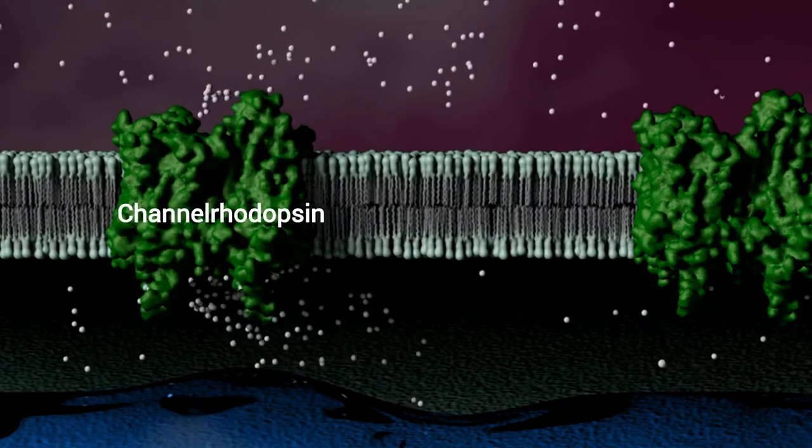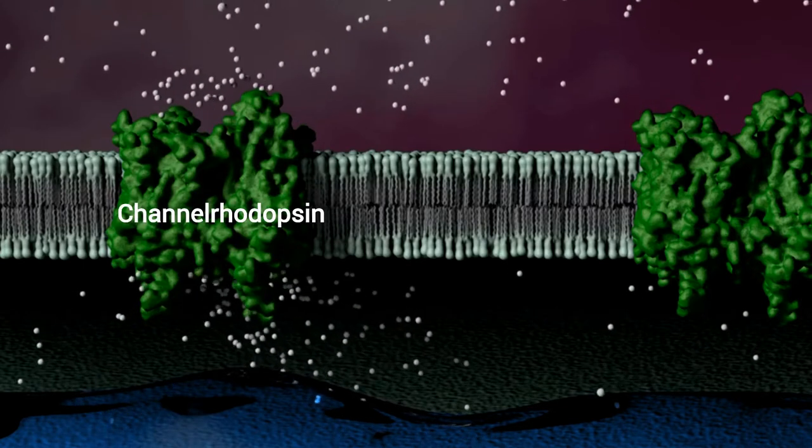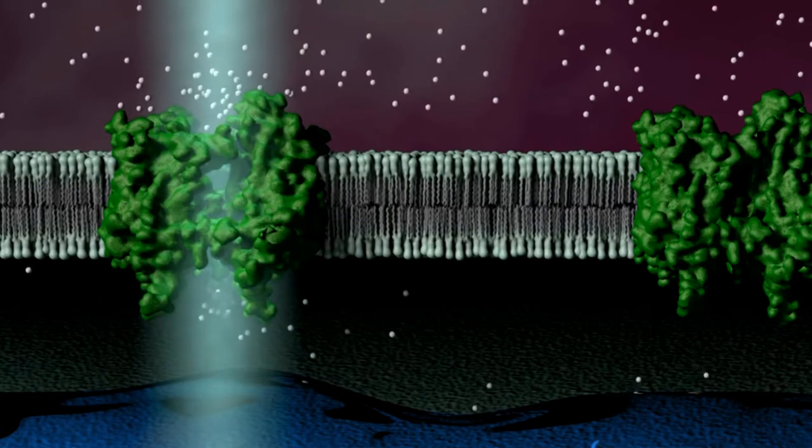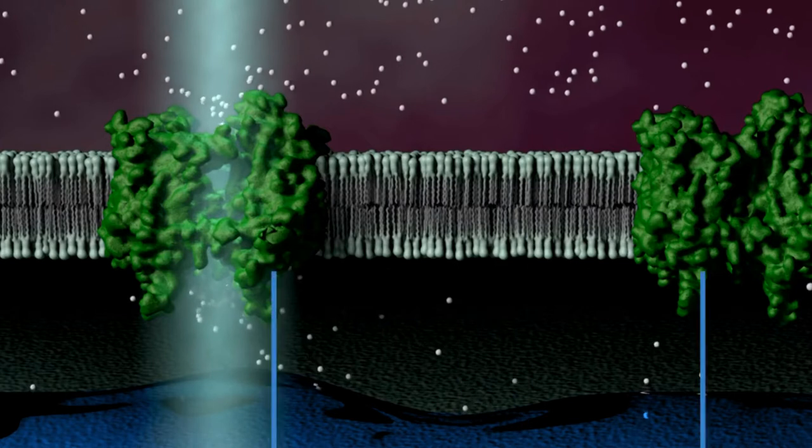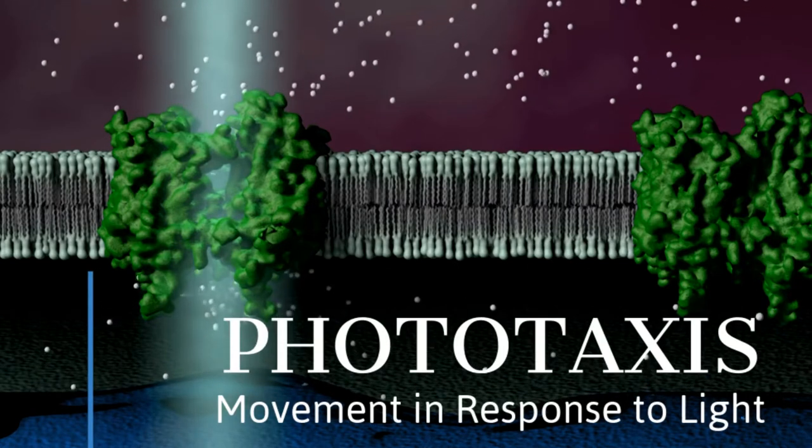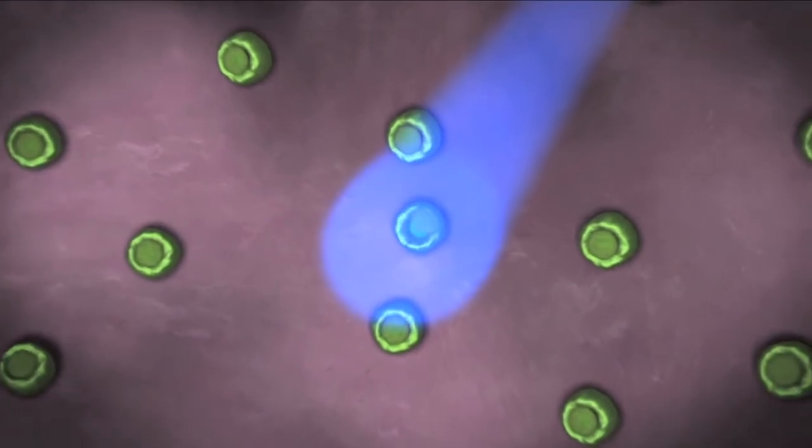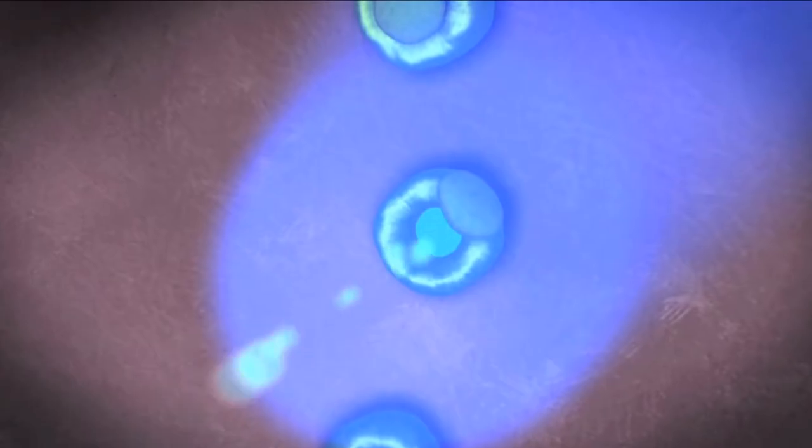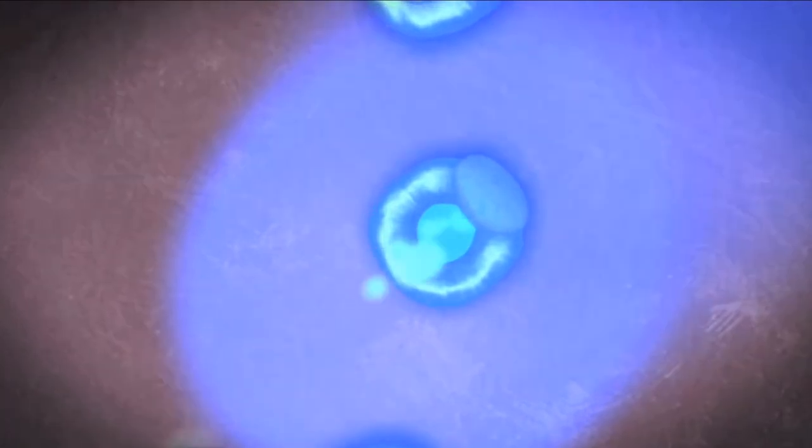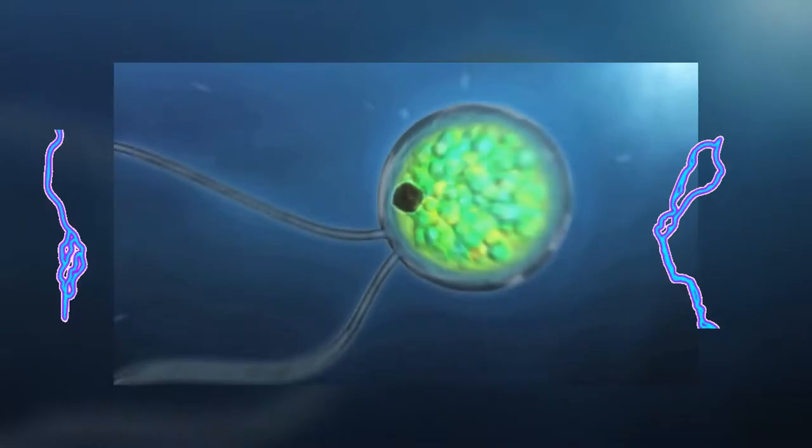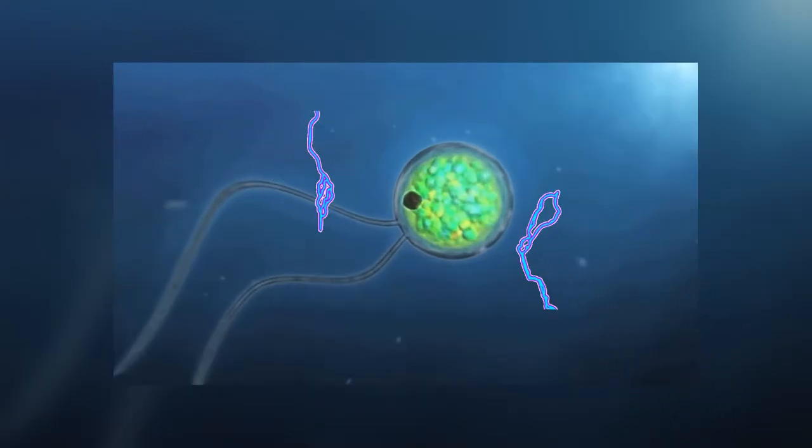The channelrhodopsin protein family is a group of gated ion channels that are activated in the presence of light. These light mediated ion channels come from unicellular algae where they act as the drivers of phototaxis, movement in response to light. Basically, light strikes the algae, the channelrhodopsin proteins embedded in the cell membrane open, the opening triggers the flow of ions across the membrane, also known as a current, and the current directly stimulates the flagella of the light-based specimen.